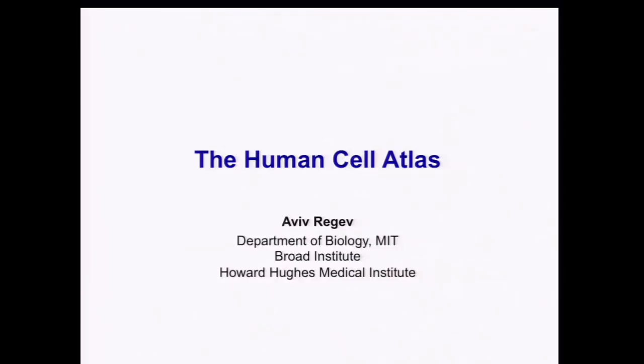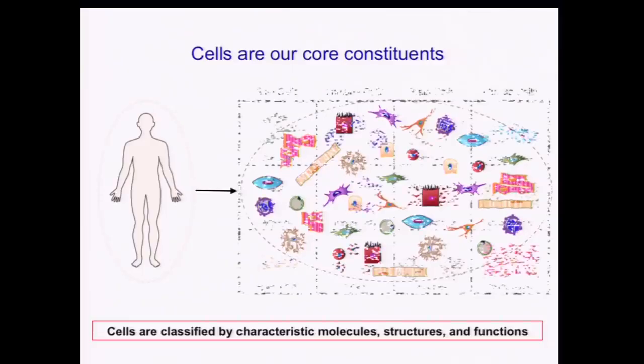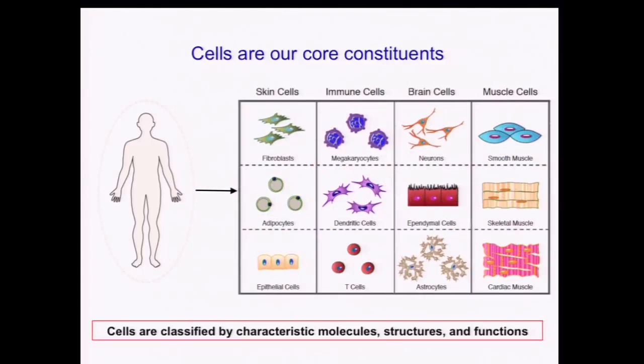Thank you for the opportunity to speak today and to try and pitch to you the Human Cell Atlas. So why cells? Cells are the core units of each and every one of us — actually, of any living organism on Earth. And our cells come in many different flavors, that we like to classify into different types by different characteristics: their function, their shape, and more recently, their molecular profiles.